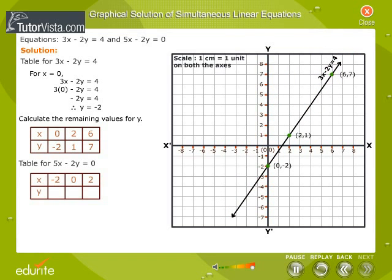Now, for solving the second equation 5x minus 2y is equal to 0, complete the table below by calculating the values for y and clicking on the OK button after each y value is calculated so as to mark the points.